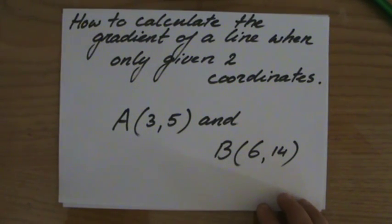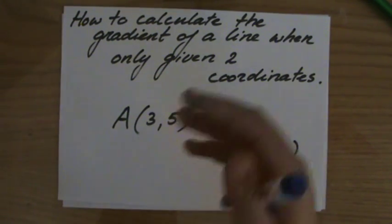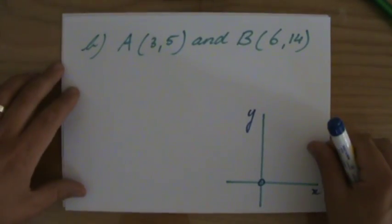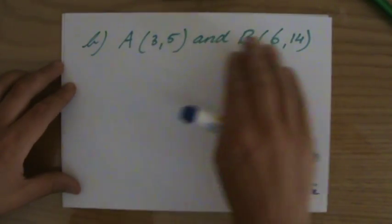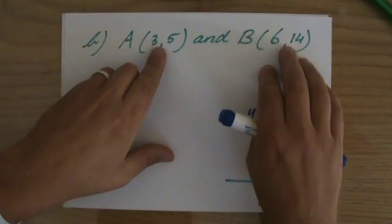Okay, now that looks perhaps a little bit scary, but it isn't. Don't worry, I'm going to show you what you have to do, and hopefully you'll understand, so you can do it yourself. I've rewritten the question here, well, partially anyway. These are the two coordinates, and I've got to find the gradient of the line going through these two coordinates.